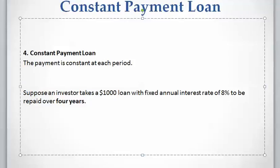Let's work on an example. Assume an investor takes a loan of $1,000, the interest rate is 8%, and the loan has to be repaid over four years under a constant payment loan.